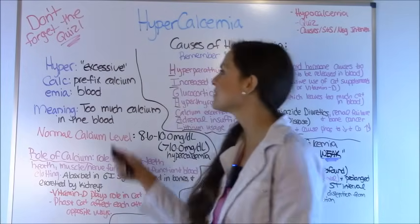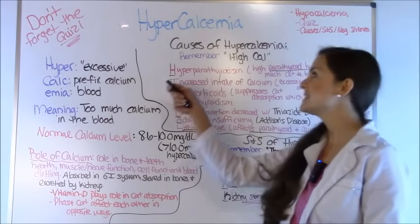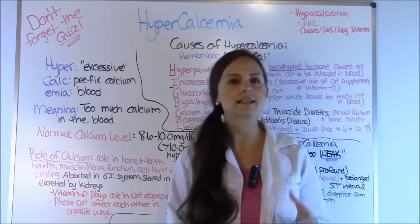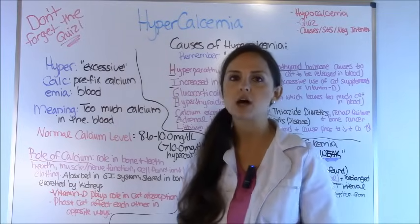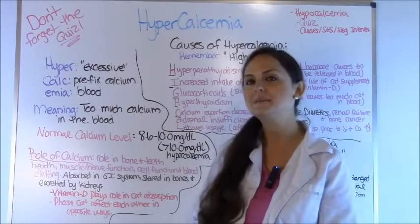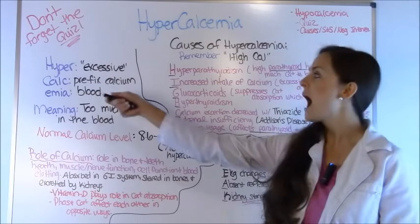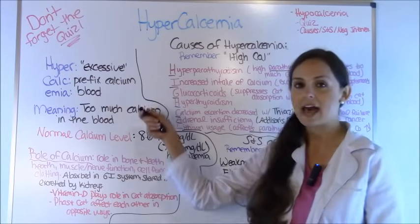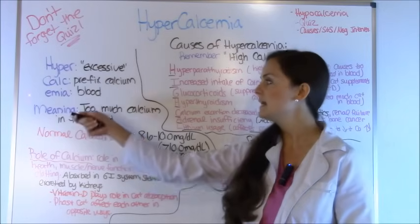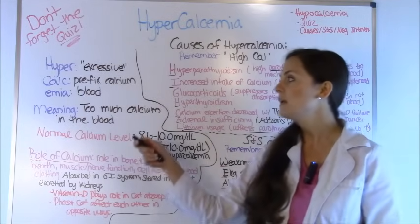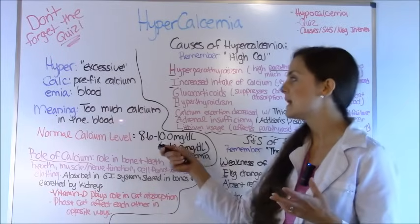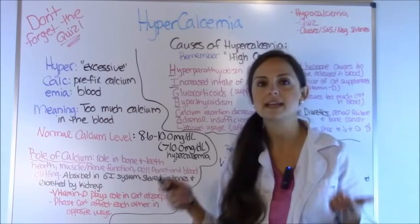First, let's go over the basics of hypercalcemia. I like to take these big words and dissect them because we need to know exactly what electrolyte we're talking about. We have a lot of hypo and hyper — hyponatremia, hyperkalemia, things like that. So hyper means excess, calc- is the prefix for calcium, and -emia means blood. So we know we're dealing with the electrolyte calcium, and the meaning is there is too much calcium in the blood.